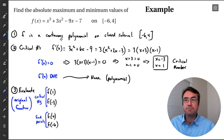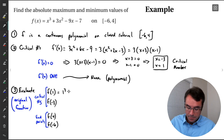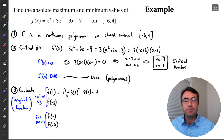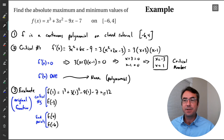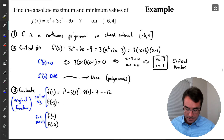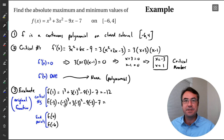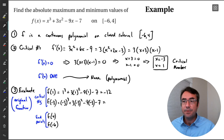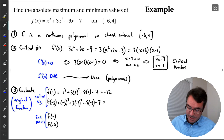Plugging x equals 1 into the original function: 1 cubed plus 3 times 1 squared minus 9 times 1 minus 7 gives us 1 plus 3 minus 9 minus 7, which equals negative 12. Plugging in x equals negative 3: negative 3 cubed plus 3 times negative 3 squared minus 9 times negative 3 minus 7. We get negative 27 plus 27, which cancels, then plus 27 minus 7, giving us positive 20.